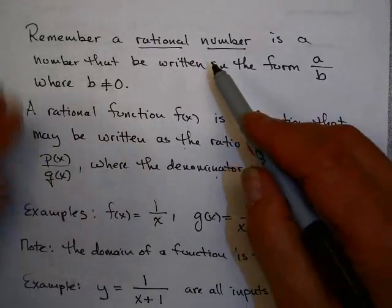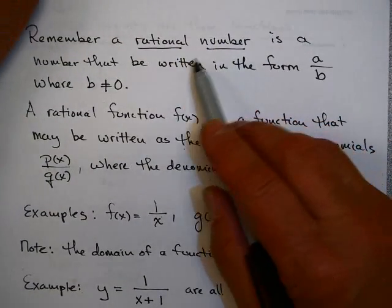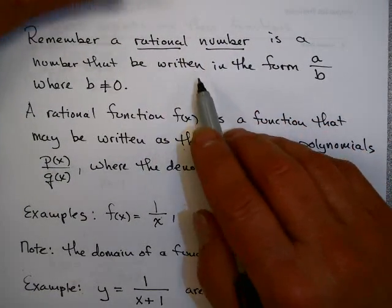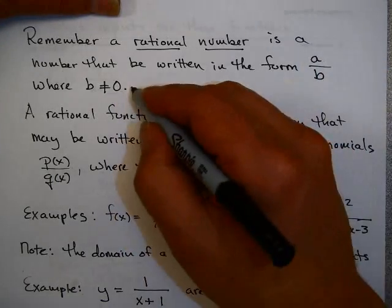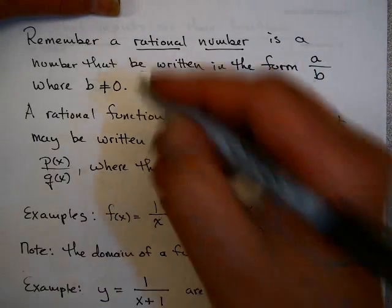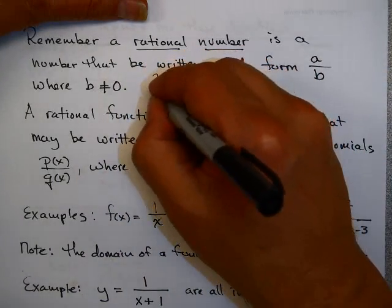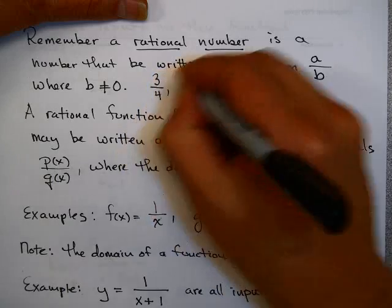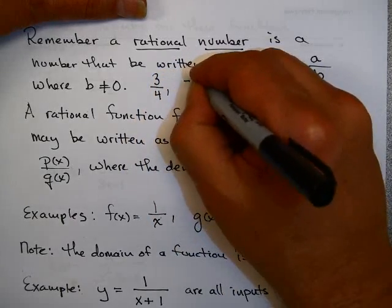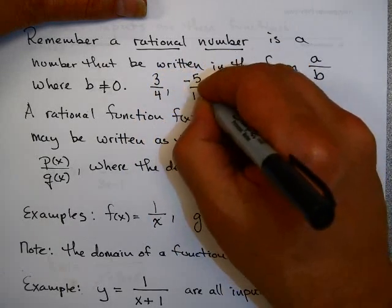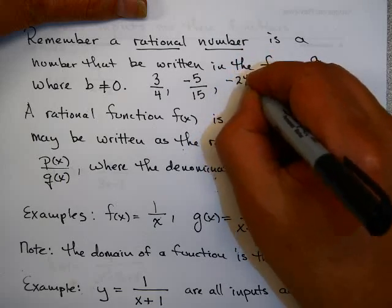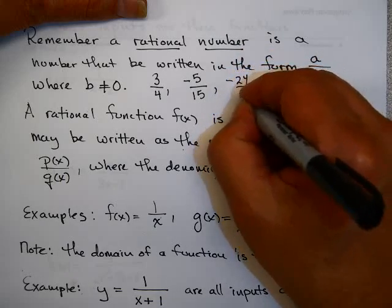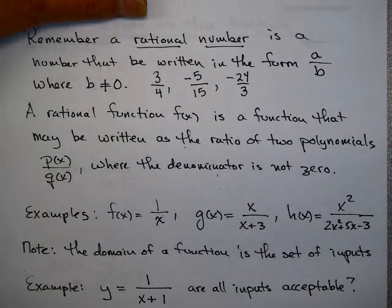Maybe you remember from arithmetic that a rational number is a number that can be written in the form a over b, where b is not equal to 0. For example, 3 fourths, or minus 5 over 15, or minus 24 over 3. Those are all examples of rational numbers.